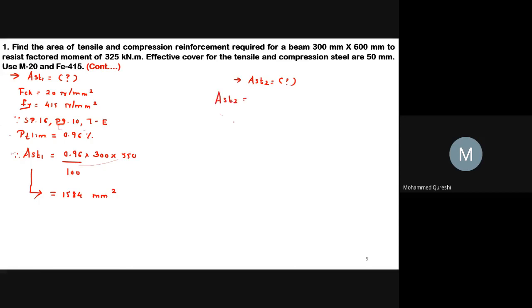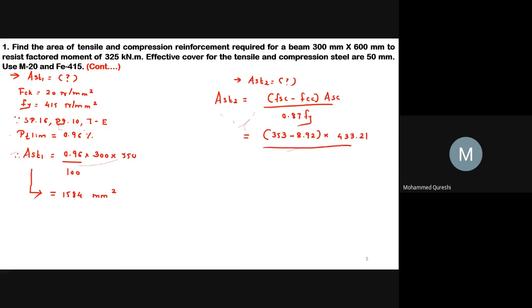Next, Ast2 is calculated using the IS 456:2000 equation (page 96): Ast2 = (fsc − fcc) × Asc / (0.87 × fy). Substituting fsc = 353, fcc = 8.92, Asc = 433.21, and fy = 415, we get Ast2 = 412.85 mm².